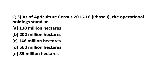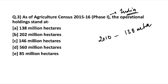The next question: as per the agriculture census 2015-16 phase 1, what is the total number of operational holdings for India? In 2010-11 the operational land holdings stood at 138 million hectares, and this has now grown to 146 million hectares. This factual information is very important to remember for examination purposes.